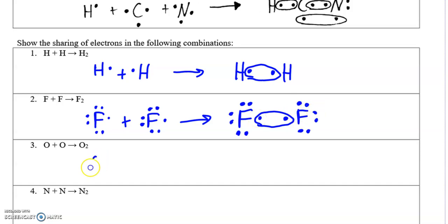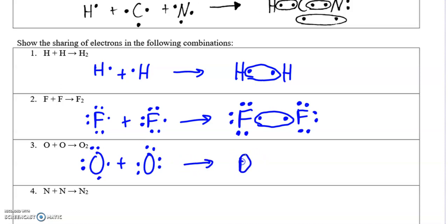Let's do oxygen. Oxygen is in group 16, it has six valence electrons. In order to get an octet, sharing one pair isn't quite enough for the oxygen — counting gives you only seven electrons. So that doesn't quite give it an octet.